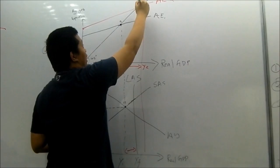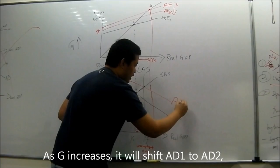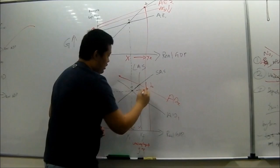When the labor are employed, they have more money to spend. Hence it will trigger a multiplier effect, moving Y1 to Y2.